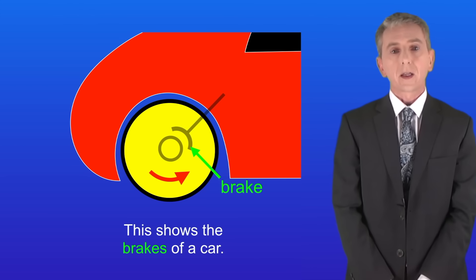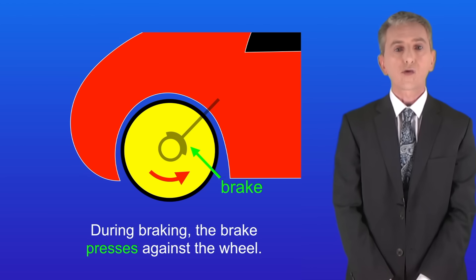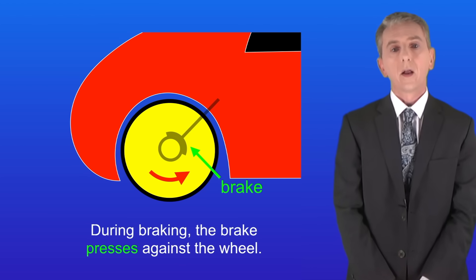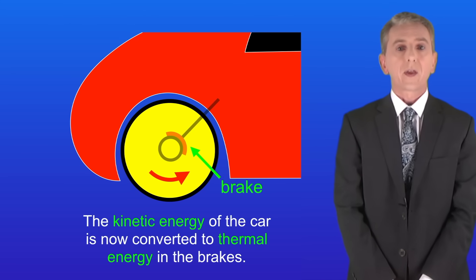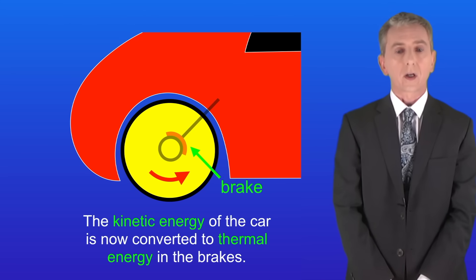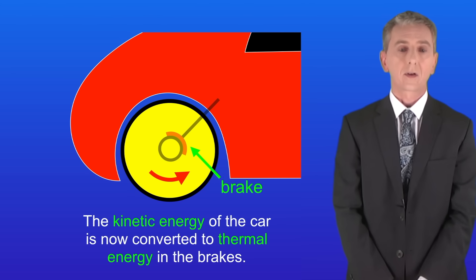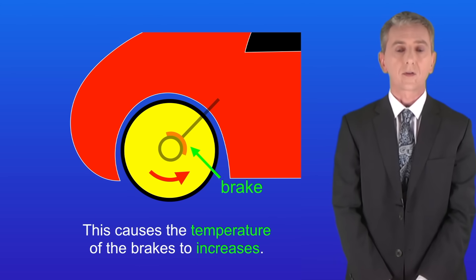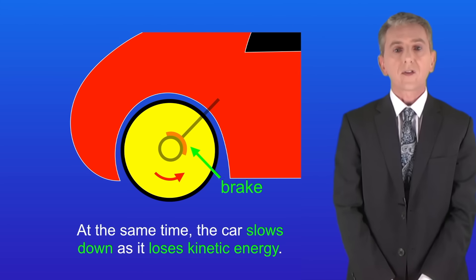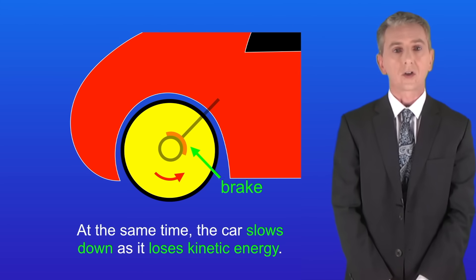I'm showing you here the brakes of a car. During braking, the brake presses against the wheel and the force of friction acts between the brake and the wheel. The kinetic energy of the car is converted to thermal energy in the brakes, which causes the temperature of the brakes to increase. At the same time, the car slows down as it loses kinetic energy.